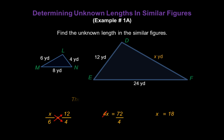And 72 divided by 4 on the right makes X equal to 18. So that's our answer. The length of side DF is 18 yards.